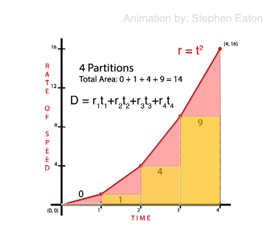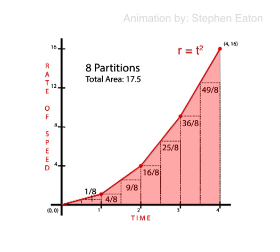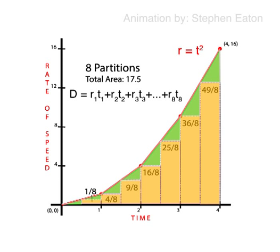But do you see all the empty space that is unaccounted for? If we double our partitions, we should be able to gain a better estimate of the area. With 8 partitions, we get a total area of 17.5, which is equivalent to 17.5 miles traveled. Note that some of the previous white space is now accounted for.